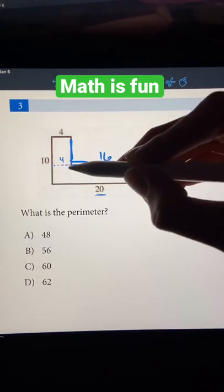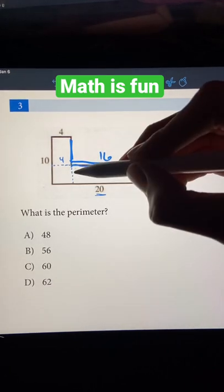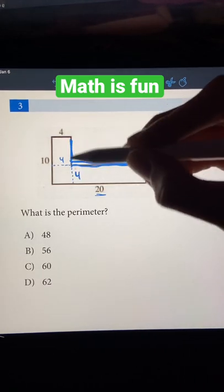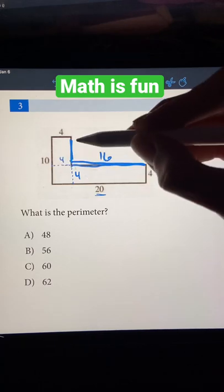And we can do the same logic for this side length. So since this is 4, that means that this is also 4, which means that this piece right here is just 10 minus 4, which is 6.